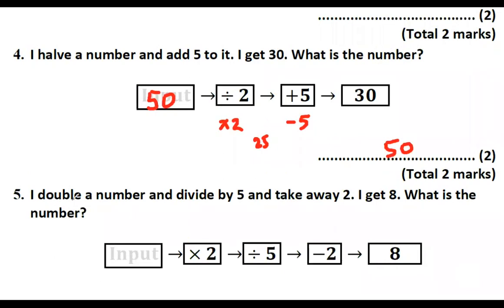Question number 5. I double a number, divide by 5 and take away 2. I get 8. What's the number? The first thing done is doubling, then dividing by 5, then taking away 2 to get 8. Doing the inverse operation we do plus 2, then times by 5, then divide by 2. So starting with 8: 8 plus 2 gives 10, 10 times 5 gives 50, and 50 divided by 2 gives 25.